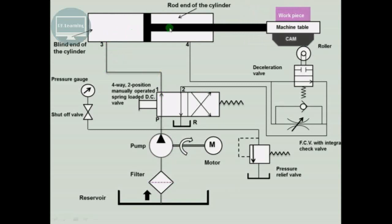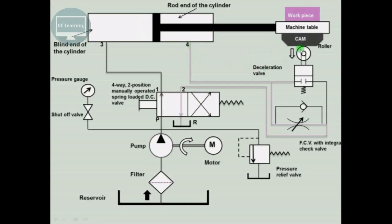The fluid forces the piston and piston rod to move in the forward direction, along with the machine table, cam, and workpiece. The cam touches the roller and presses it downward. Initially the valve is normally open; once the roller is pressed down the valve moves to the blocked position. Since the cam has touched the roller, we now want to reduce the speed of the machine table so that work can be performed on the workpiece at a reduced speed.